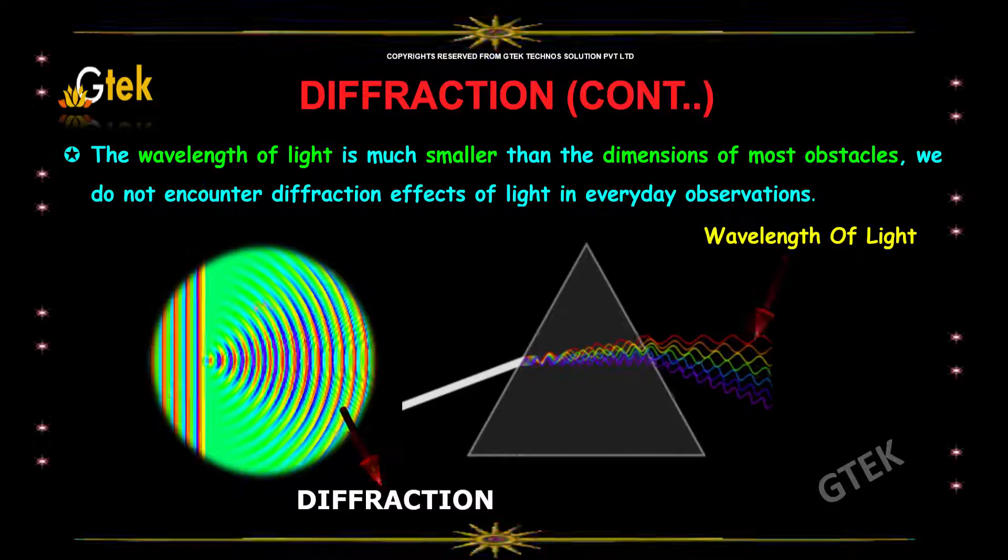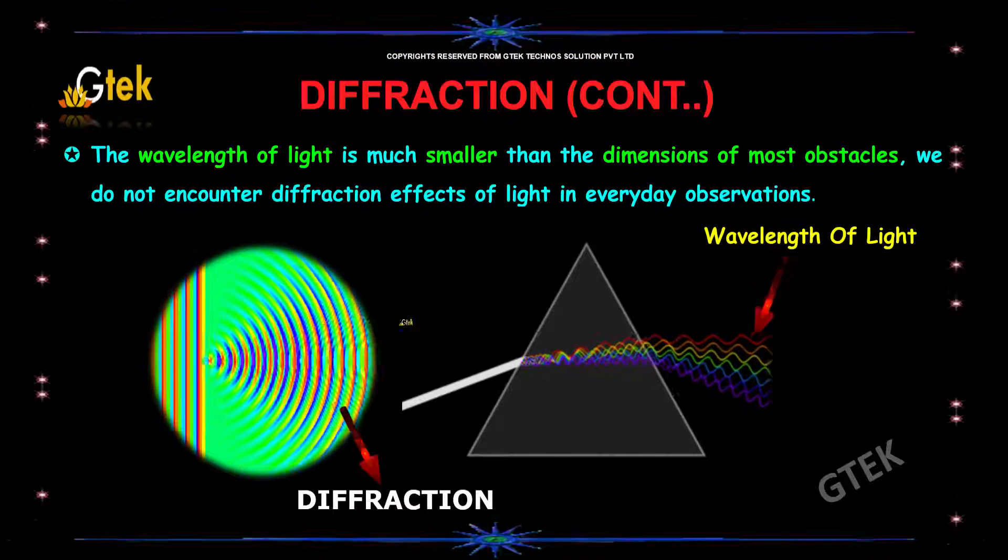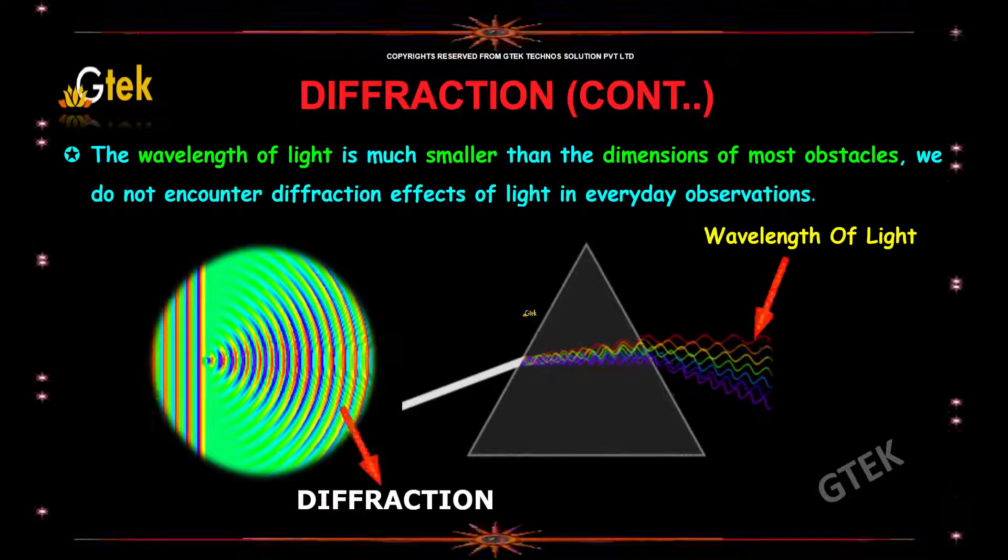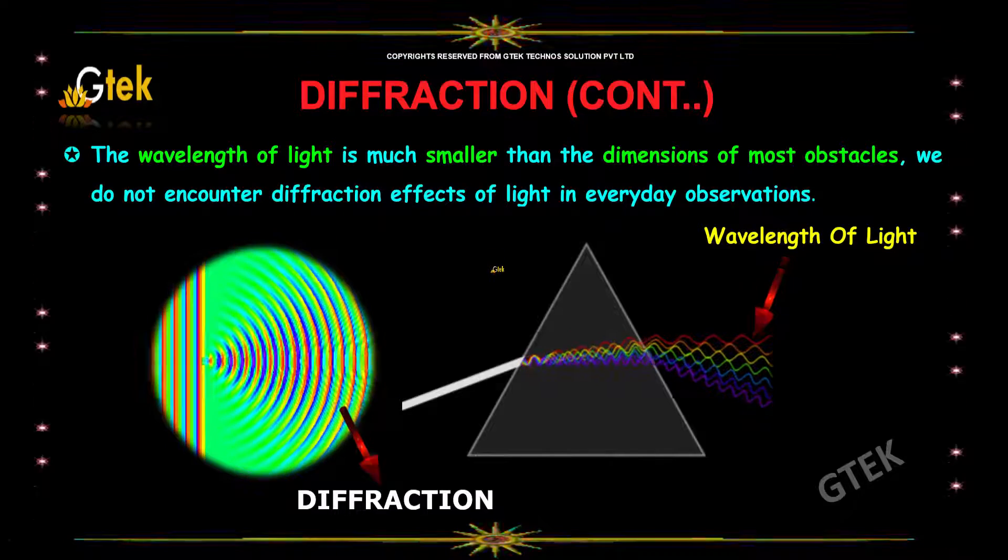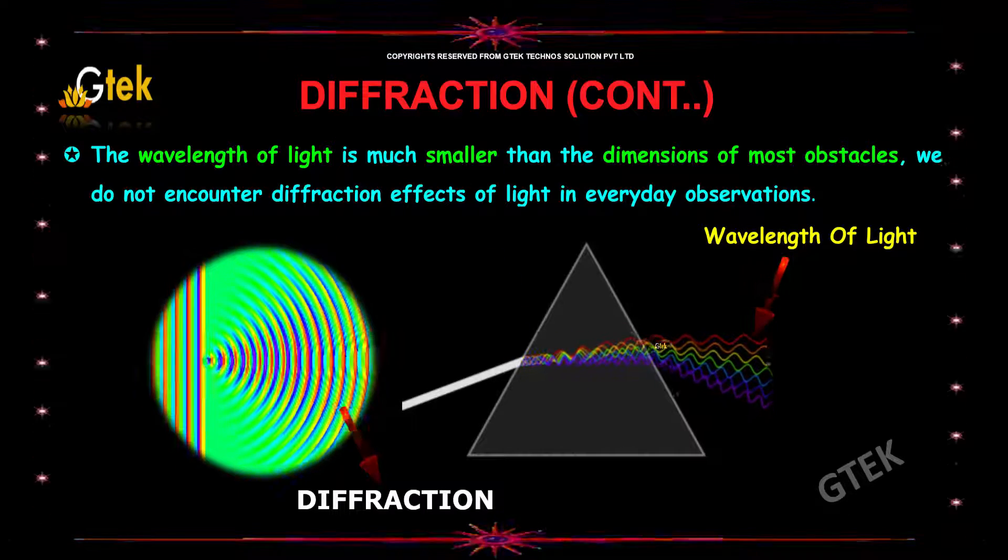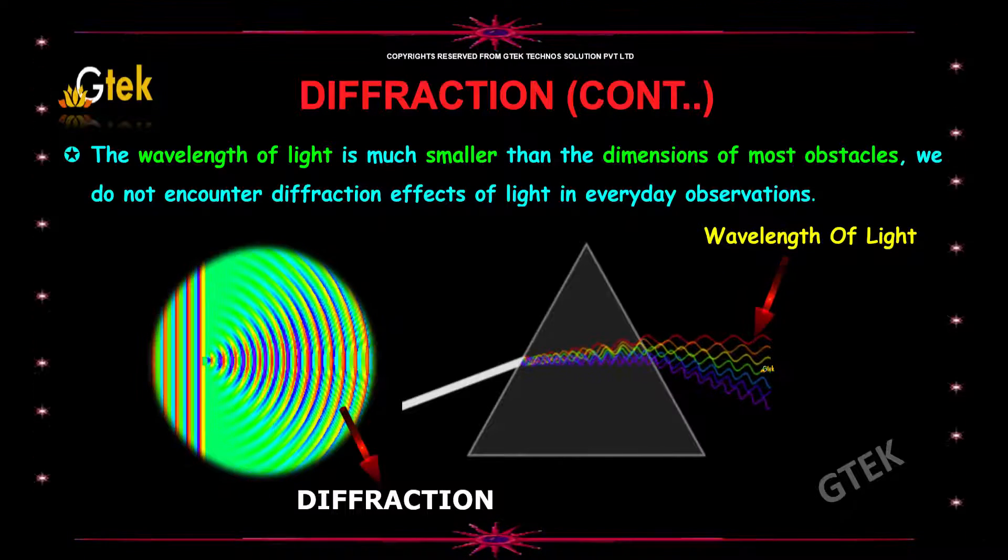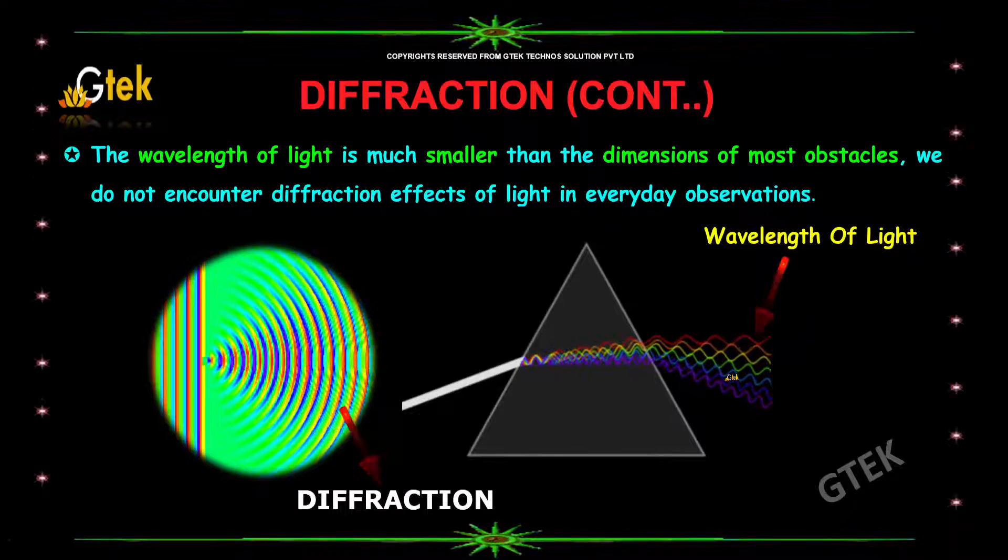The wavelength of light is much smaller than the dimension of most obstacles, so we do not encounter diffraction effects of light in everyday observations. You are able to see the wavelength of light. Each color will be having different wavelengths.